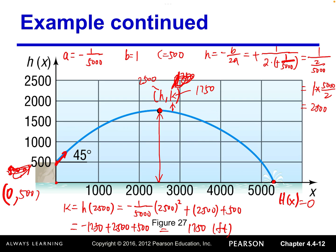For part (b), the projectile striking the water means we're looking for the x-intercept. Using the original quadratic function h(x) equals negative one over five thousand times x squared plus x plus 500, we set h(x) equal to zero and solve for x.